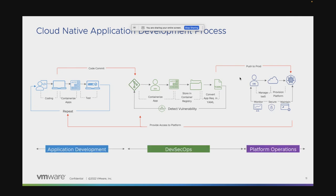For simplicity, let's call the first set the application development team, the middle one the DevSecOps or DevOps team, and the last one the platform operations team. You might have all three teams, or just a single team that does a lot of this, or two teams within your organization. Regardless, these three roles — app dev, DevOps, and platform ops — represent the key segments of the Kubernetes containerized workload management process.